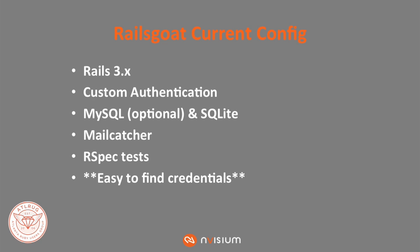So, basic configuration right now when we talk about Rails Goat: it's a 3x app. It's got some custom authentication — we'll talk about that in the next slide. MySQL is an option but by default it's SQLite. It uses a mail catcher, standard things you'd expect to see. RSpec tests — now these tests are a little bit interesting, and I think if we have time I can demo them. The tests are actually security tests.